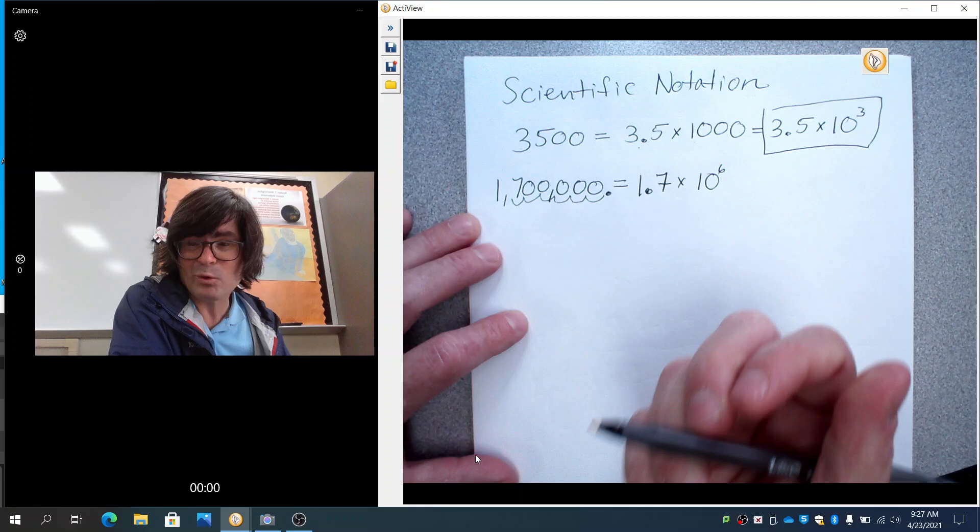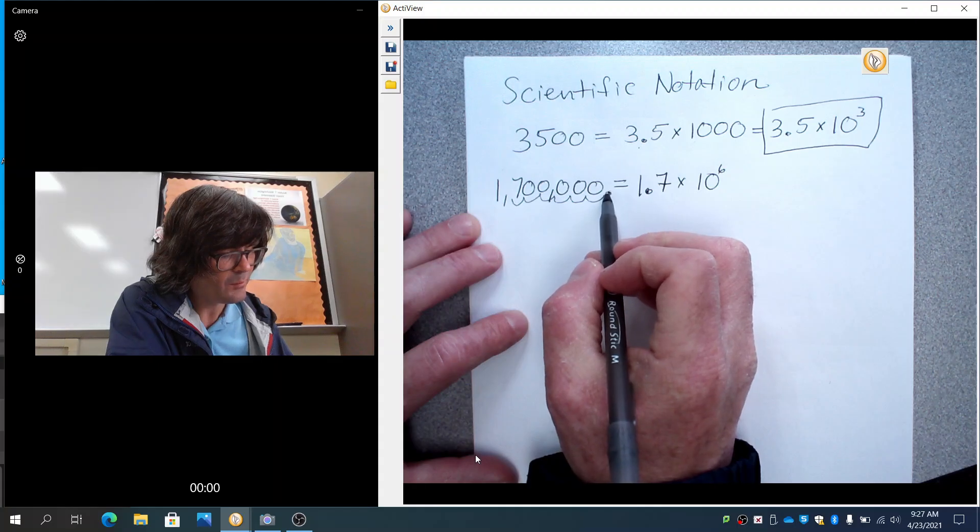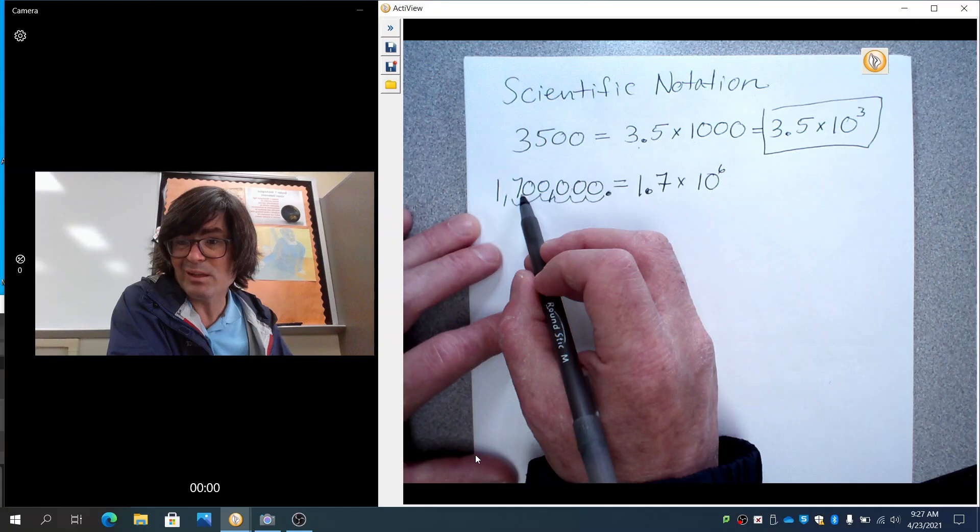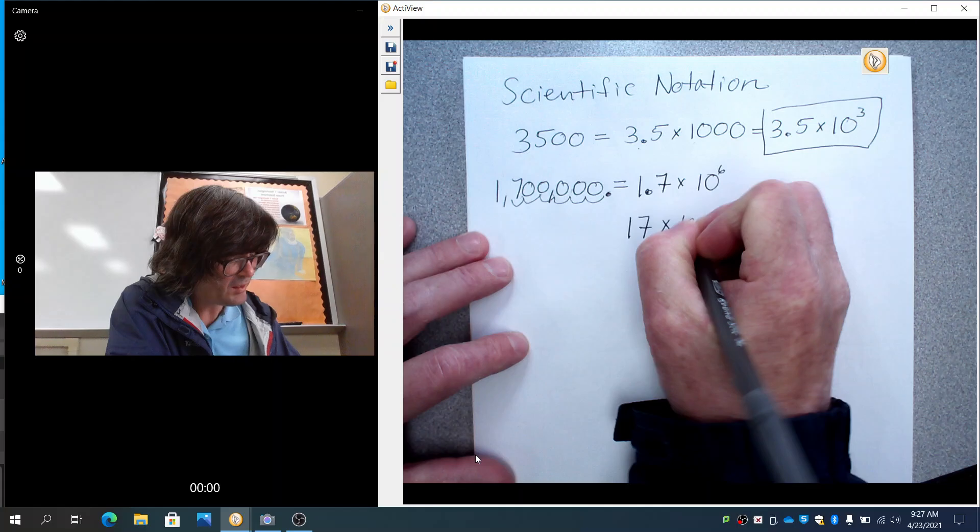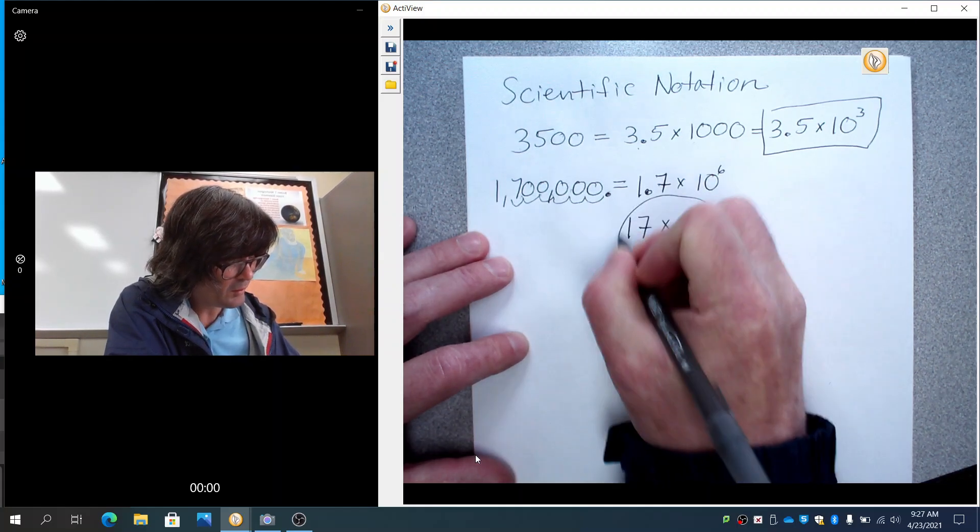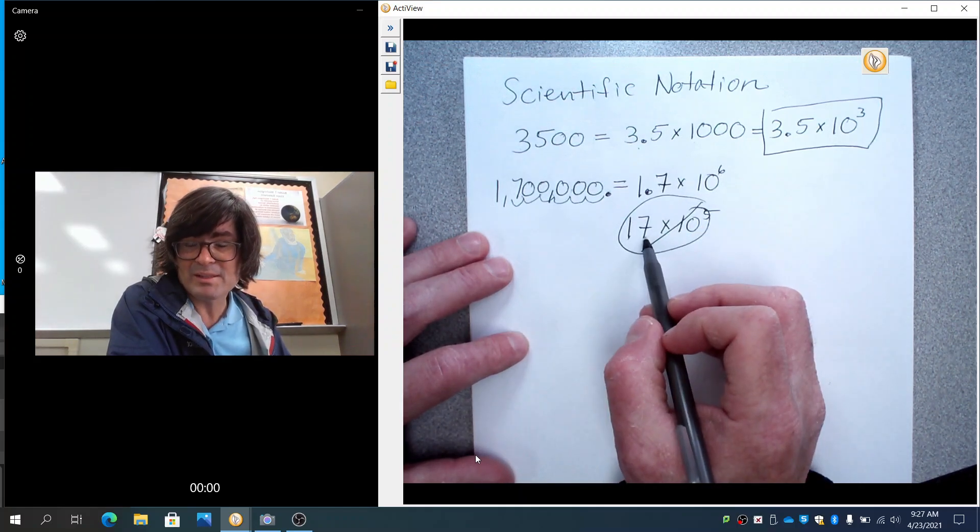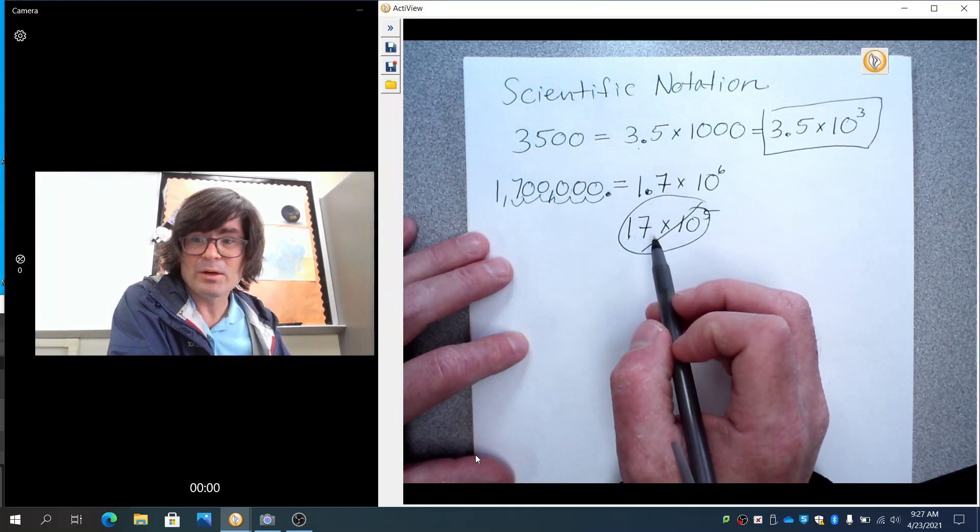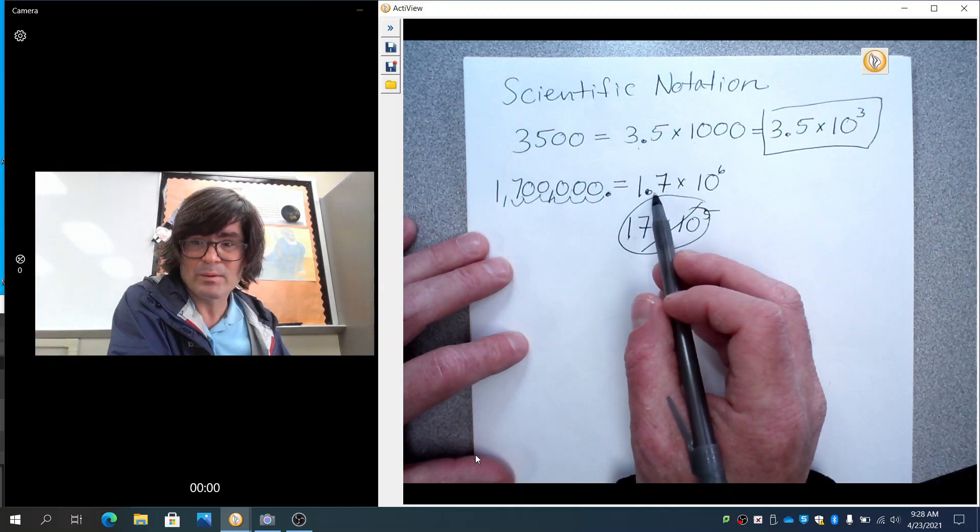And 1.7, so one question is, how do I know when to stop? How do I know I shouldn't have done 1, 2, 3, 4, 5, and then had 17 times 10 to the fifth? The reason you would not do that, I'm going to write that down, 17 times 10 to the fifth and make a little cross out through it. The reason I would not do that is because this number is not between 1 and 10. This number is between 1 and 10. So that's why you know to stop at the 1.7 when the decimal is right there.